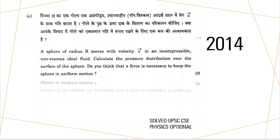Hello everyone, in today's video we will be solving this question from the year 2014. The question says there is a sphere of radius R which is moving with a velocity U in an ideal fluid which is incompressible and non-viscous — so our fluid has zero viscosity. We have to find the pressure distribution over that sphere and check whether a force is necessary to keep the sphere in uniform motion.